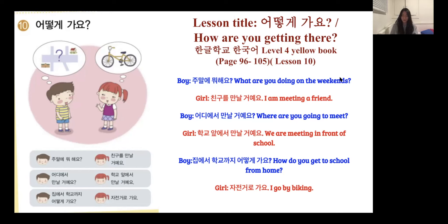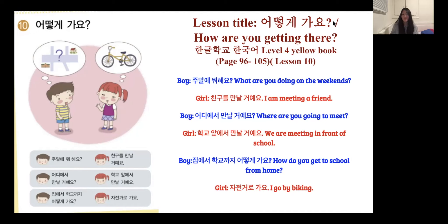We see an image on the first page. The boy says, 'What are you doing on the weekends?' The girl says, 'I'm meeting a friend.' He asks, 'Where are you going to meet?' She says, 'We are meeting in front of school.' He asks, 'How do you get to school from home?' And the girl replies, 'I go by biking.' So today's lesson is about different forms of transportation, which leads us to the next page.